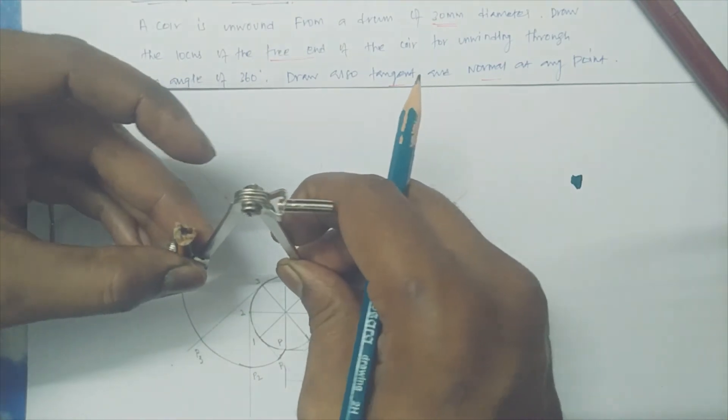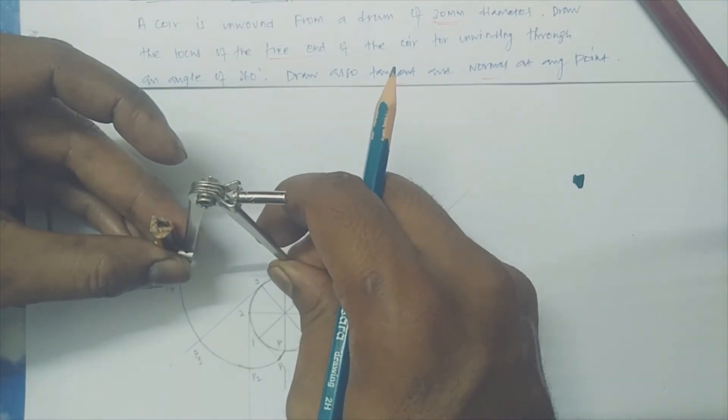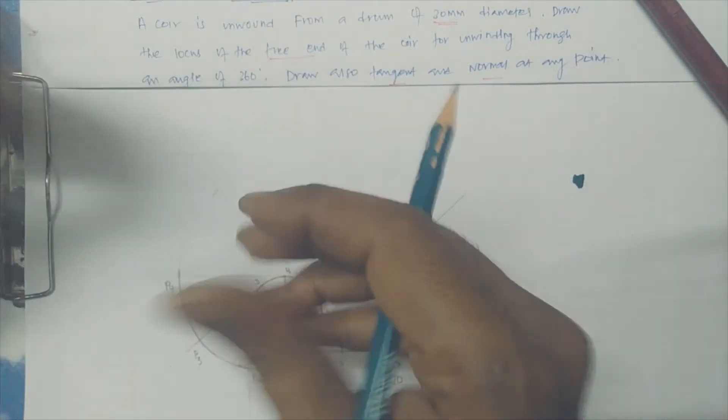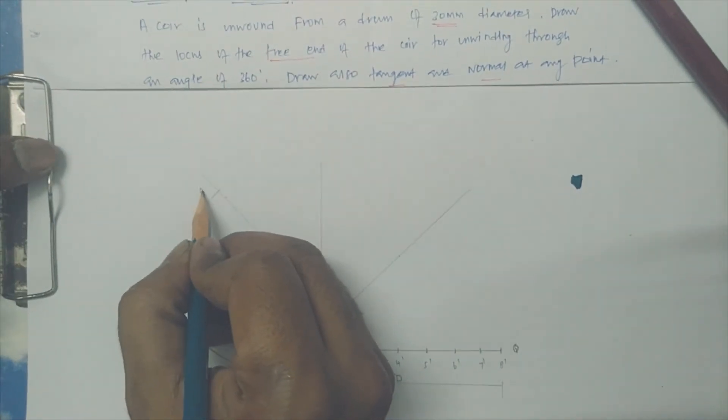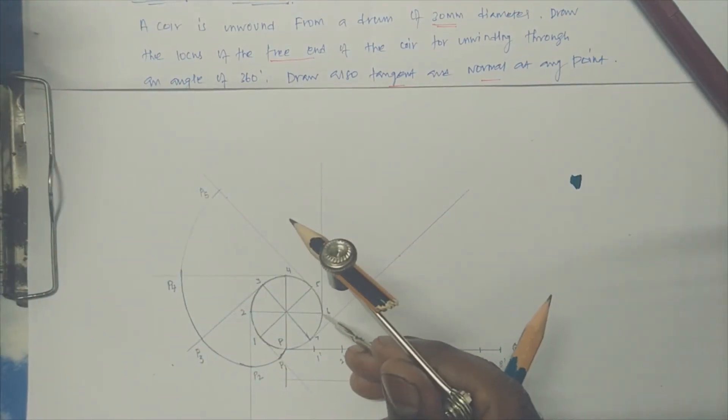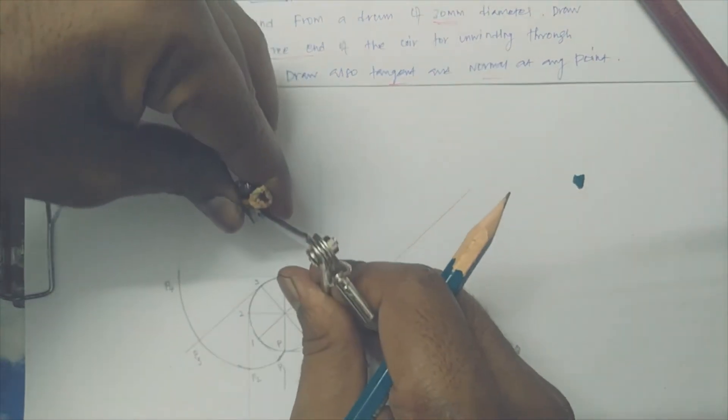You leave an arc, so that will mean that the point is P4. Now you just keep 5 as a center, P4 as a radius. You just leave the line, so up to here this you can mark that is P5.